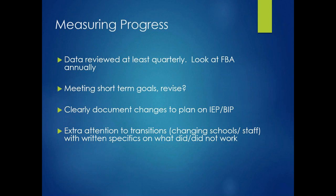I would suggest that data from a behavior plan be reviewed at least quarterly, if not sooner. FBAs may need to be reviewed annually, if not sooner, and they need to be updated — the function may change, or maybe we didn't identify the right function in the first place if the behavior plan is not changing. We can ask if the child's short-term goals are being met, and if not, revise them or determine why — maybe there's a medication change in process and we need to give it more time. We need clearly documented changes on the plan, on the child's IEP, and on the behavior intervention plan, so we have a written record and everyone is on the same page.